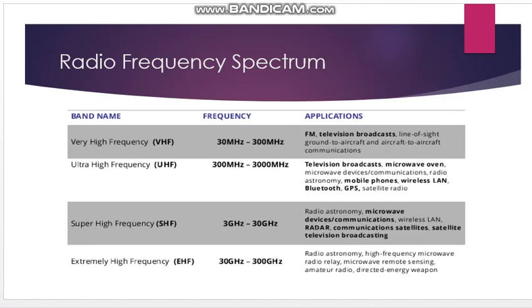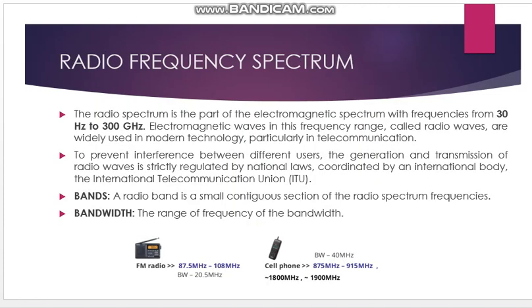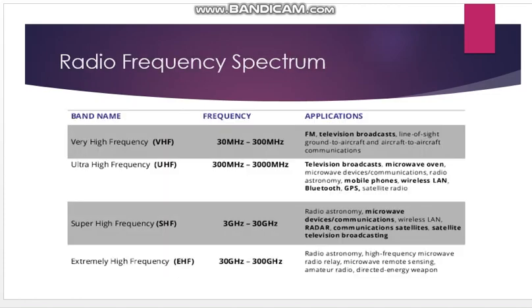Ultra High Frequency (UHF) is also used for television broadcasts, mobile phones, wireless LAN, GPS, etc. Super High Frequency (SHF) ranges from 3 GHz to 30 GHz and covers radio astronomy, microwave devices, communications, and wireless LAN. Extremely High Frequency (EHF) covers 30 GHz to 300 GHz. Most frequencies from 3 GHz to 300 GHz are known as microwave frequencies, dedicated to microwave applications. The main radio frequency spectrum spans 30 Hz to 300 GHz.